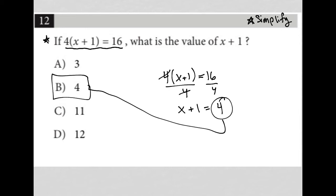Let's make sure we're reading the question carefully. The question does not ask us to solve for x. It asks us to solve for x+1. And x+1 is already isolated here inside parentheses, so I'm just trying to remove this 4 by dividing both sides of the equation by 4.